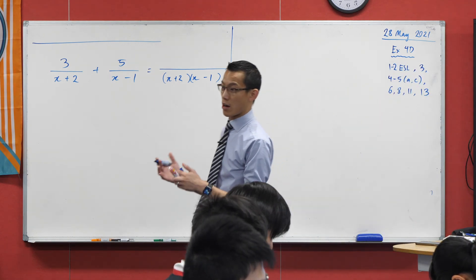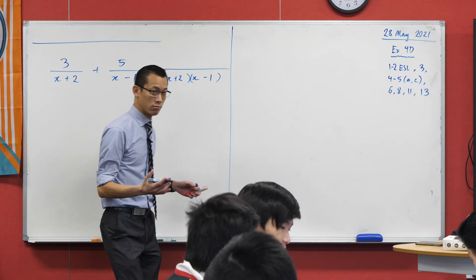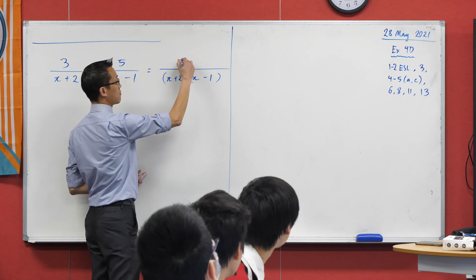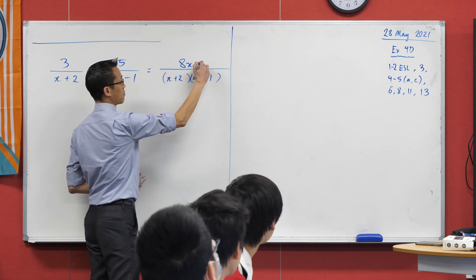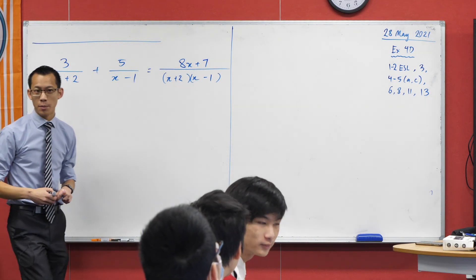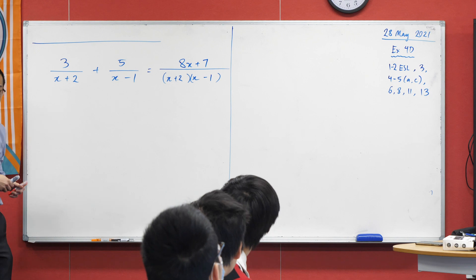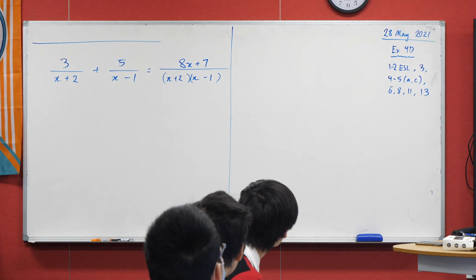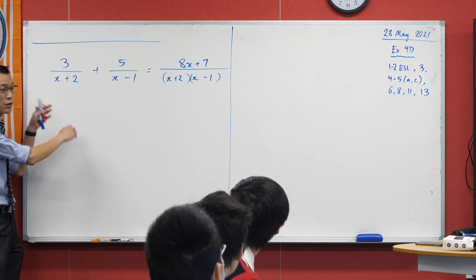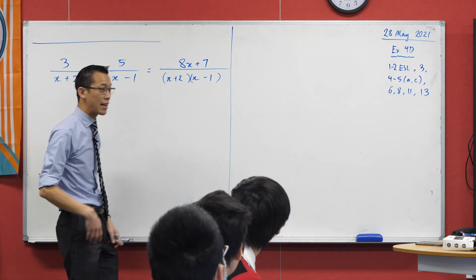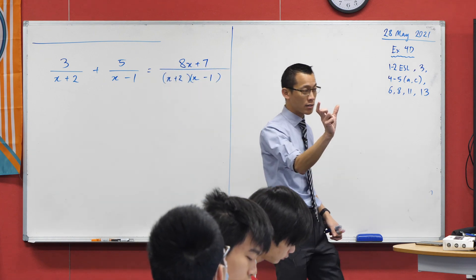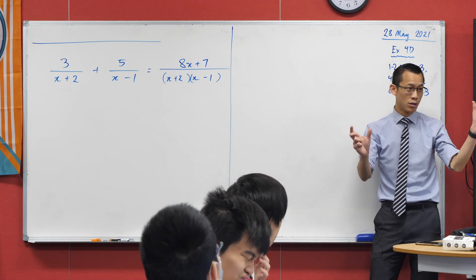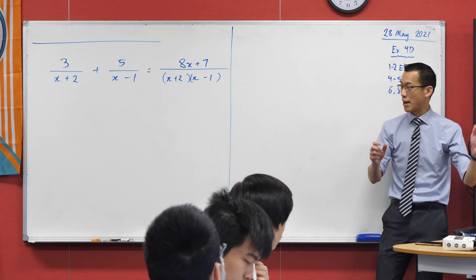What have you got as your numerator? 8x plus 7? Happy times — you probably have a couple of lines of working there. Now I'm going to ask this same question because you have no context to this. I just gave you a pair of algebraic fractions and you've turned it into a single algebraic fraction.